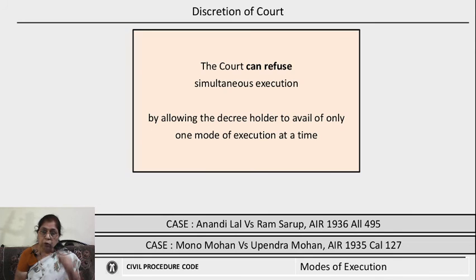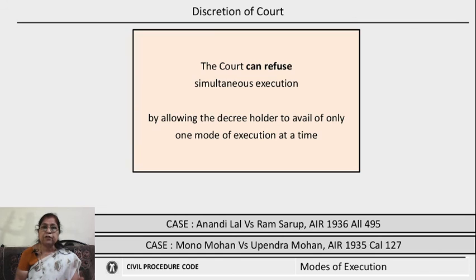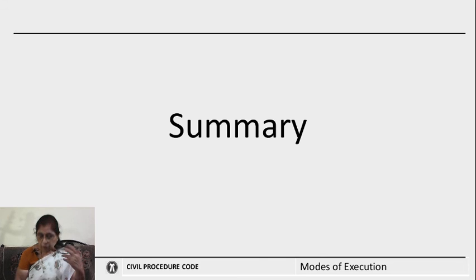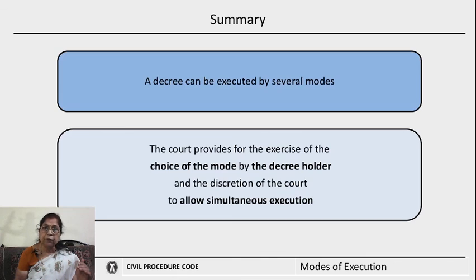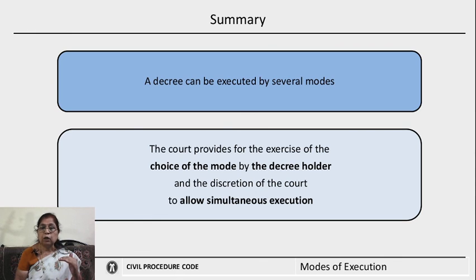Particularly when the court orders arrest and detention, the provisions relating to that mode stated in the proviso must be strictly followed. To summarize: a decree can be executed by several modes under section 51. The court provides for the exercise of the decree holder's choice of mode, and also retains discretion to allow simultaneous execution wherever necessary. The choice is the decree holder's and he can decide what mode is to be adopted, subject to judicial oversight by the court.